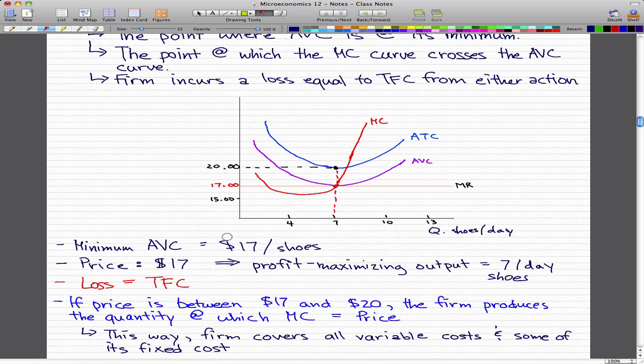In this case, the firm incurs a loss equal to the total fixed cost. At this point where the profit maximizing output is 7 shoes per day and the price is $17, our average variable cost is $17 and our marginal revenue is also $17. So that cancels out, and all the loss that we incur is our total fixed cost.